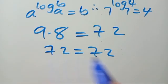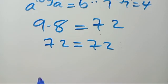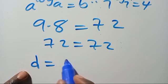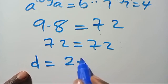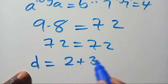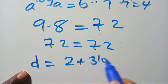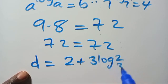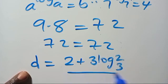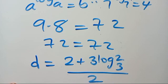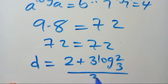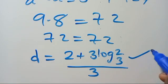Since the left-hand side equals the right-hand side, D equals 2 over 3 plus log 2 in base 3 divided by — the answer is verified and satisfied.